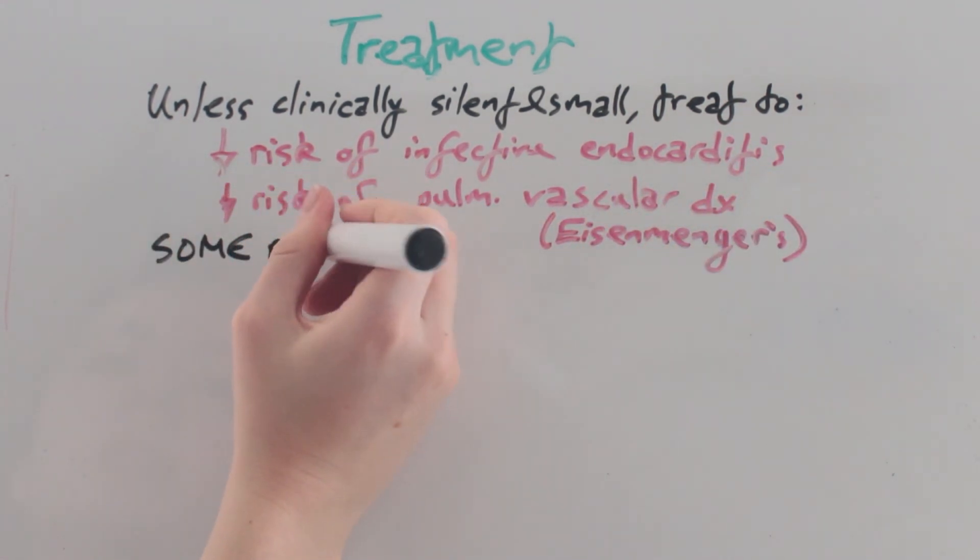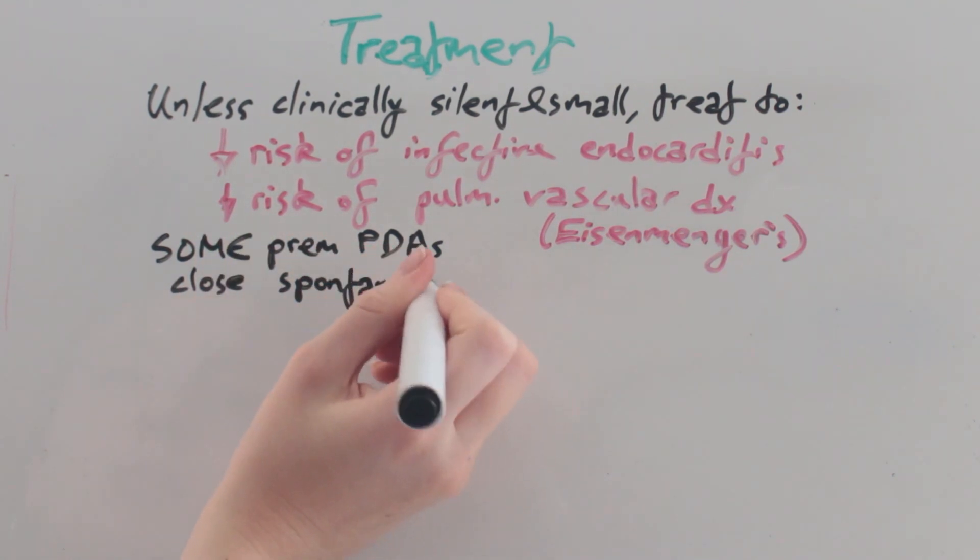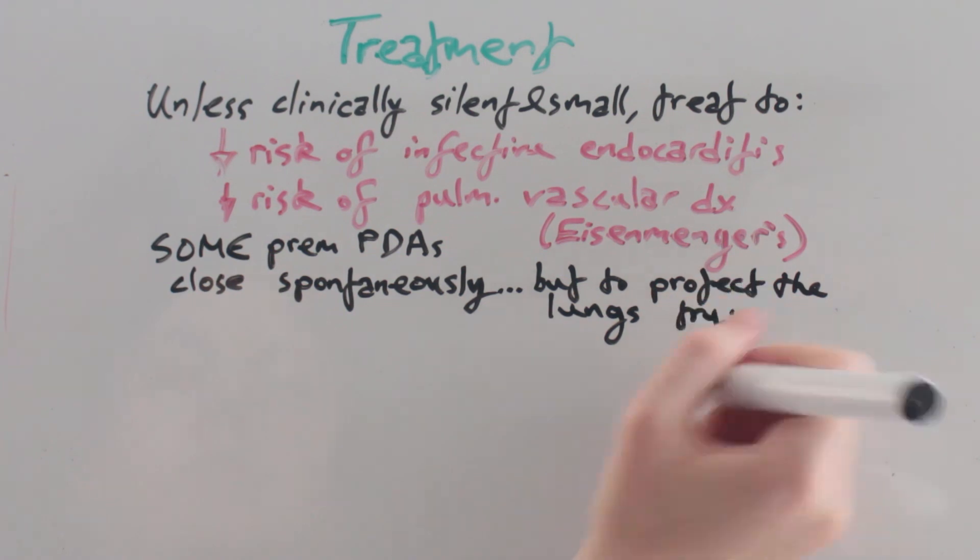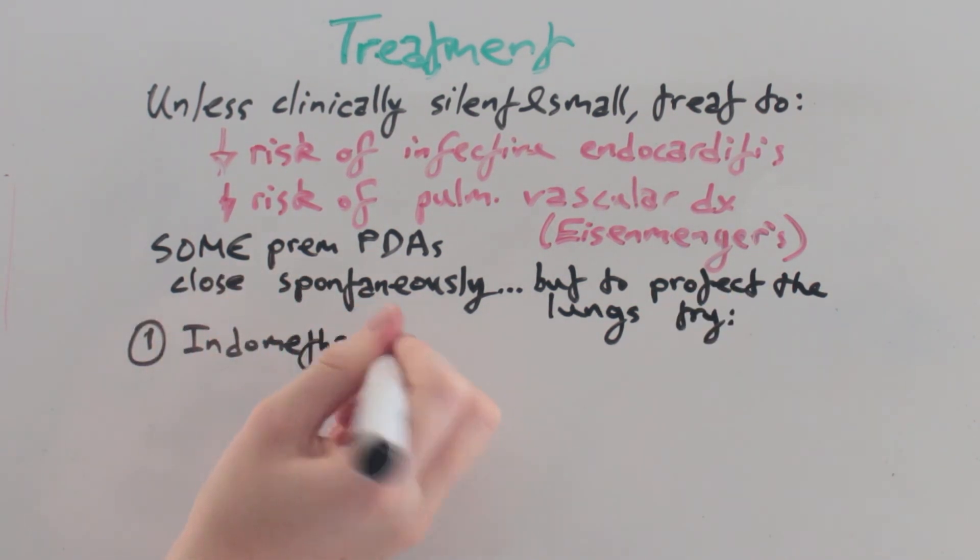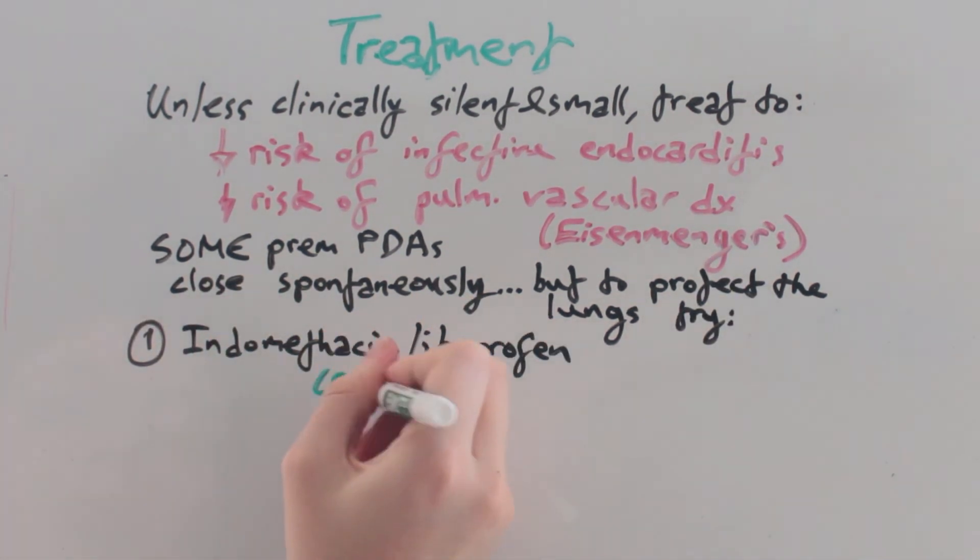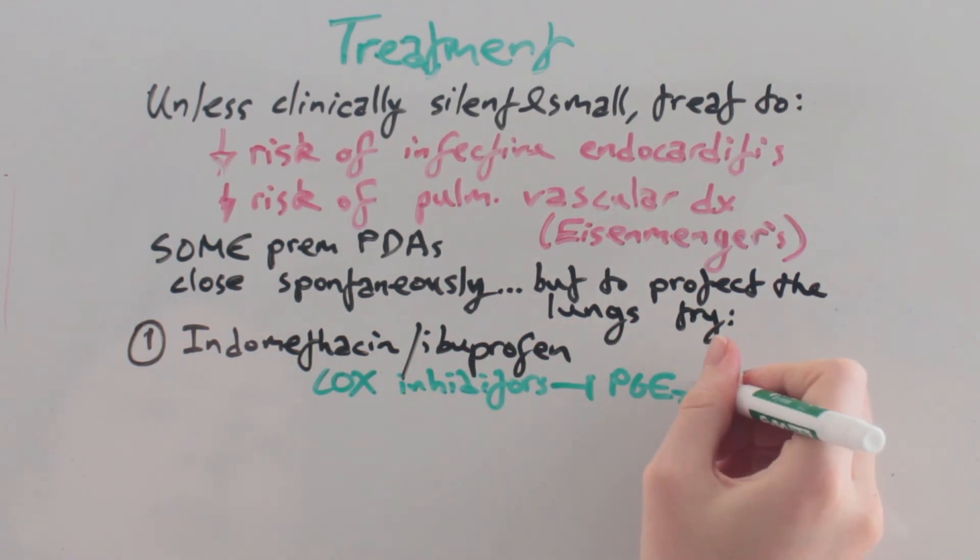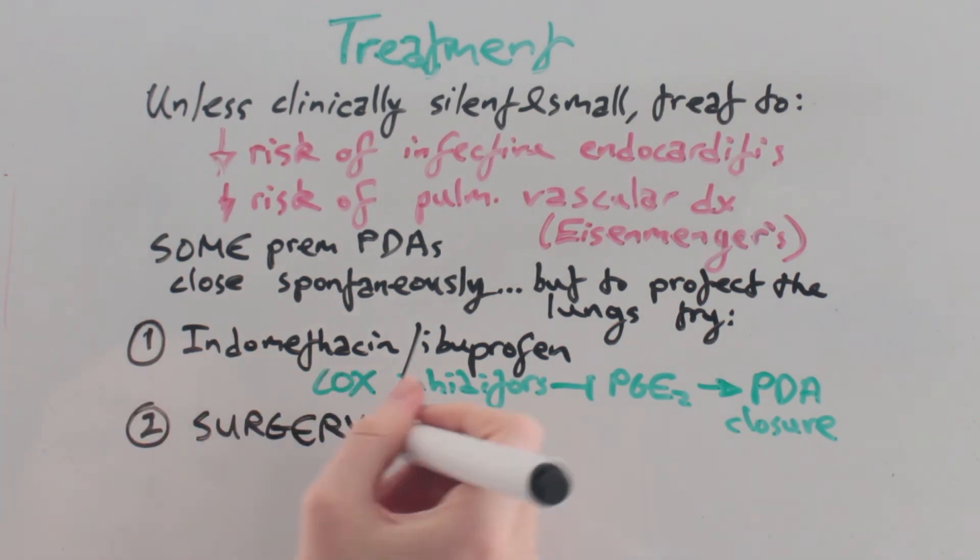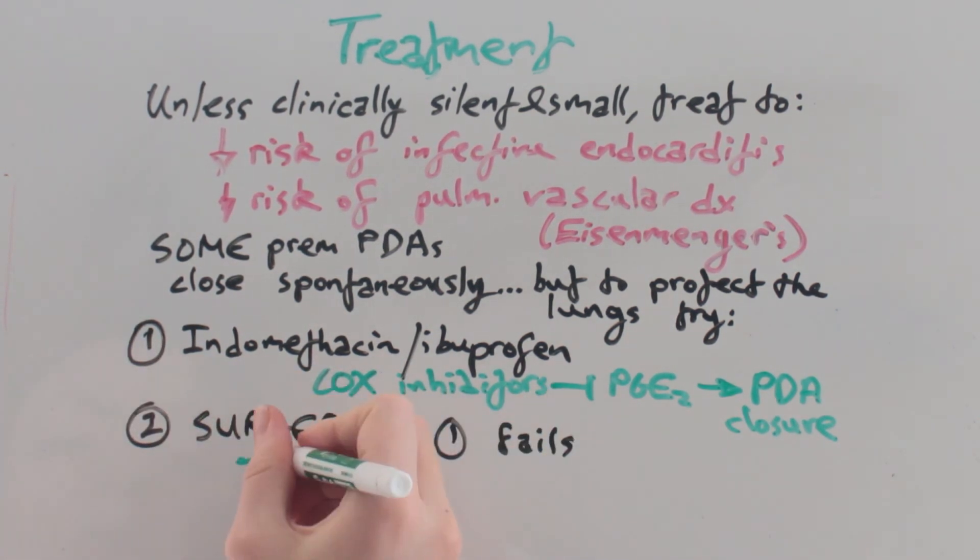As we have seen, some premature PDAs close spontaneously, but to protect the lungs from unnecessary high blood flow, we can give indomethacin or ibuprofen. These are COX inhibitors which reduce the production of prostaglandin leading to closure of the PDA, and surgery can be used if medical treatment fails.